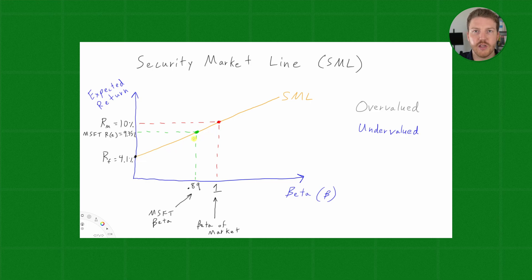And because as beta increases, our systematic risk that we're taking increases, we demand to be compensated with a higher expected return. That is why the security market line has this upward slope.